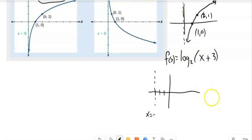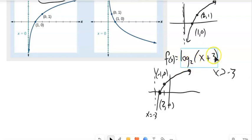This point that was at (1,0) gets moved back, subtract 3 from it, to (-2,0). This point that was at (2,1), subtract 3 from it, gets put to (-1,0). And then it's like that. Notice that on here, x must be greater than negative 3, because I can't take the logarithm of a negative number and stay in the real numbers.